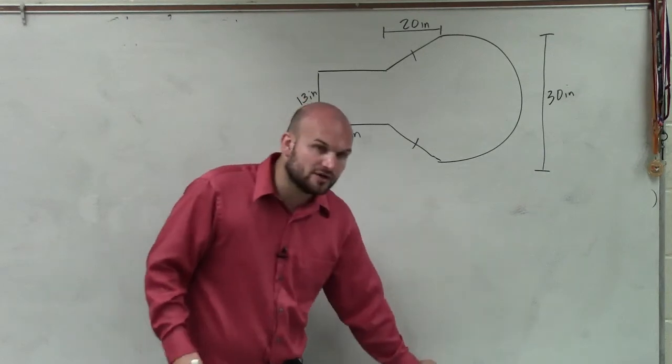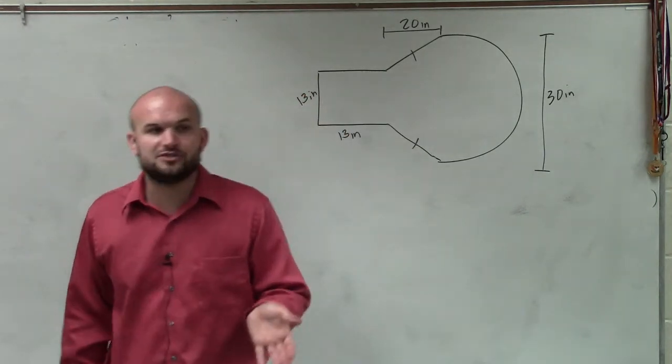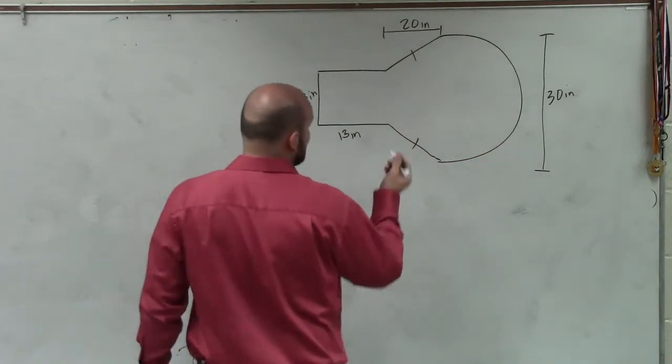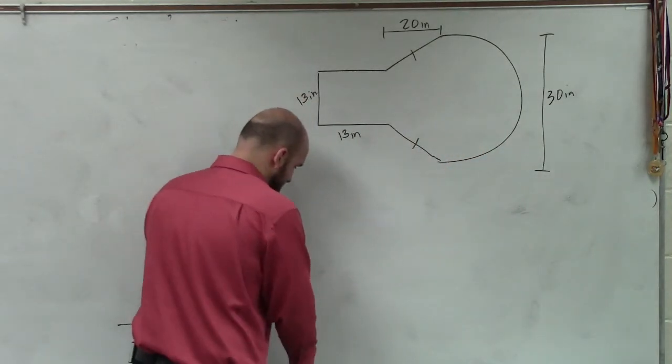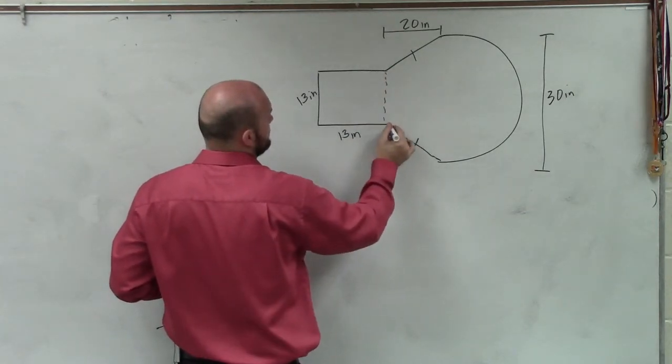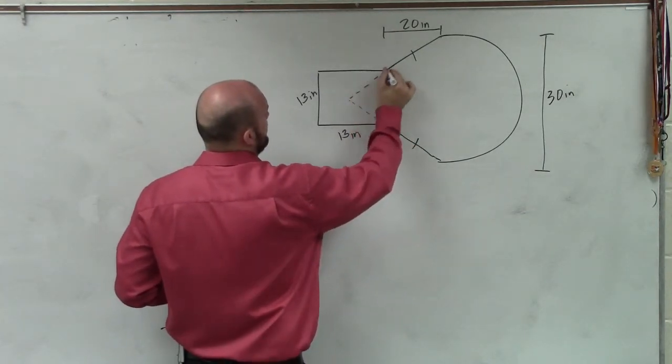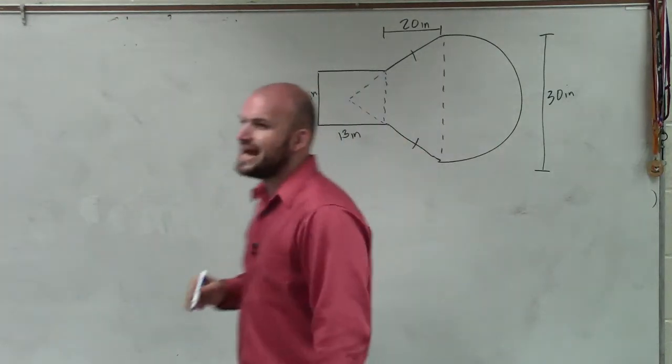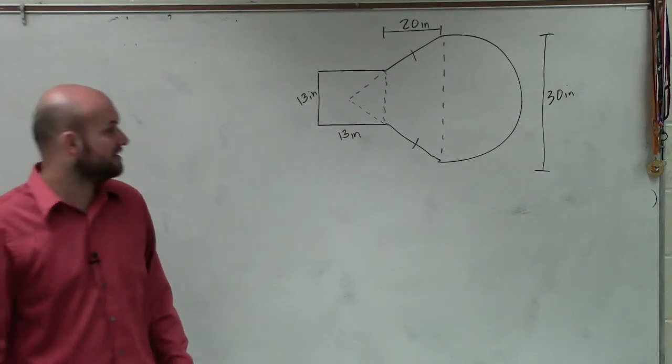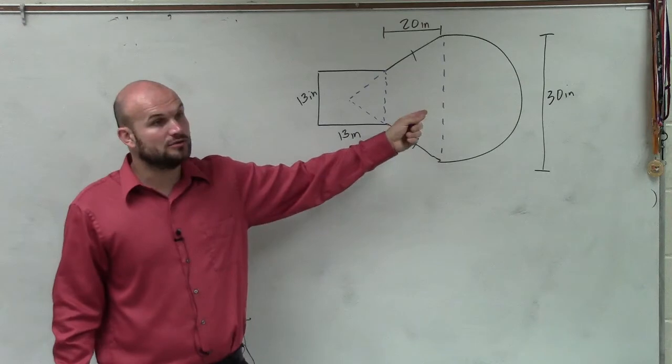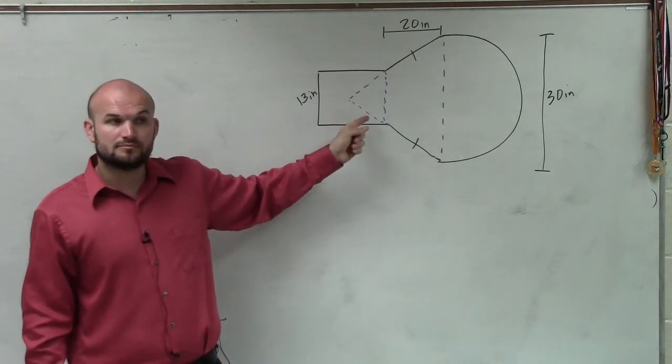Now, however, we can break this up into different types of figures and find the areas of each one of them. So what I do is I'm going to draw some lines. Do you guys now see three different areas or three different figures? I have a semicircle, I have a triangle, and I have a square.